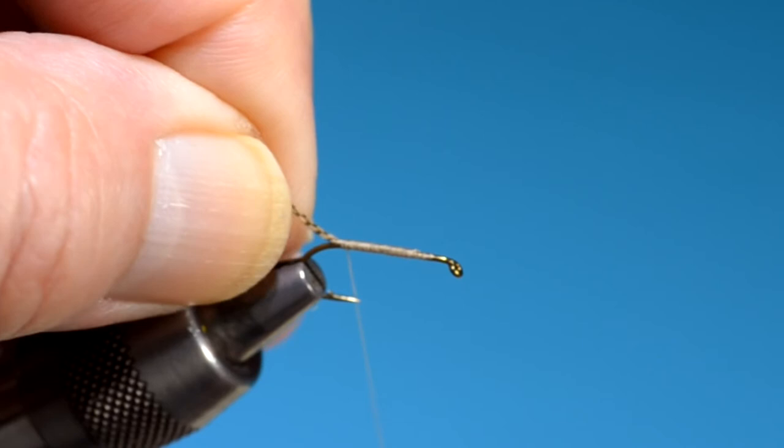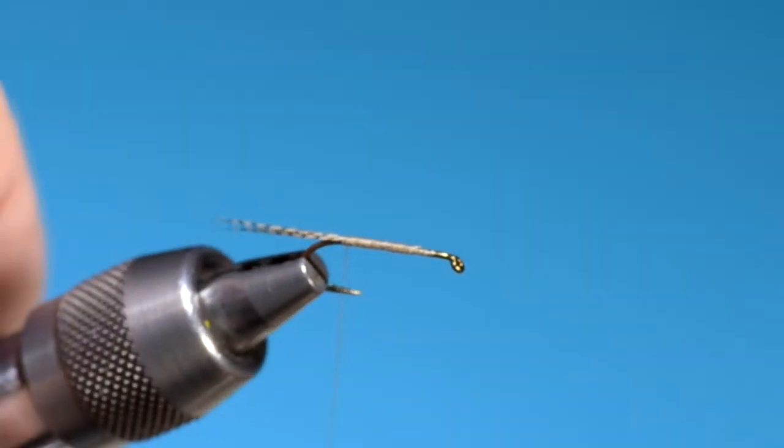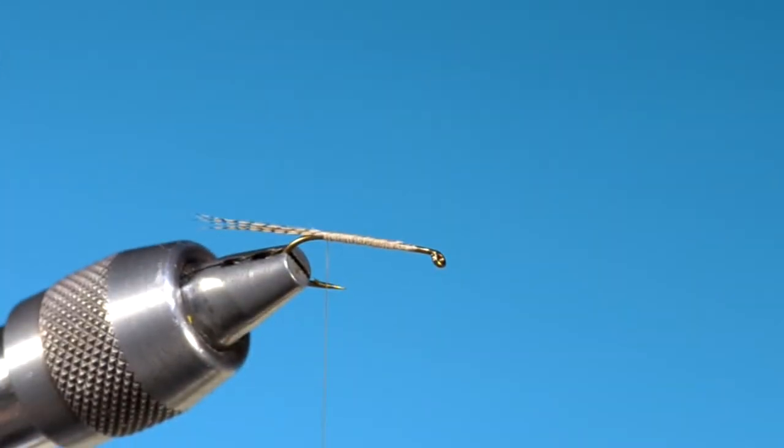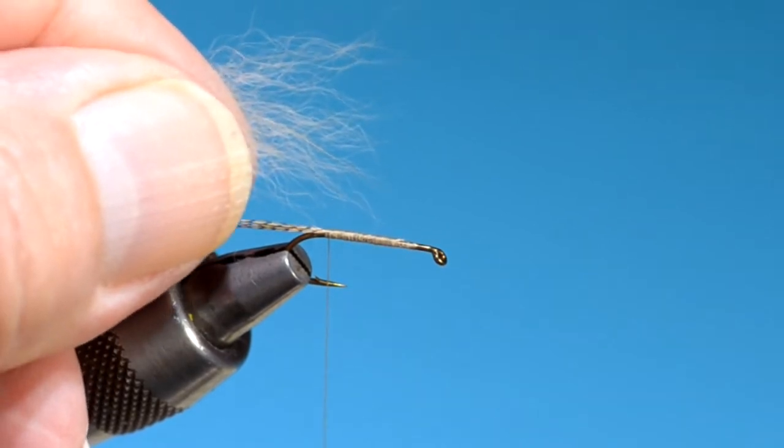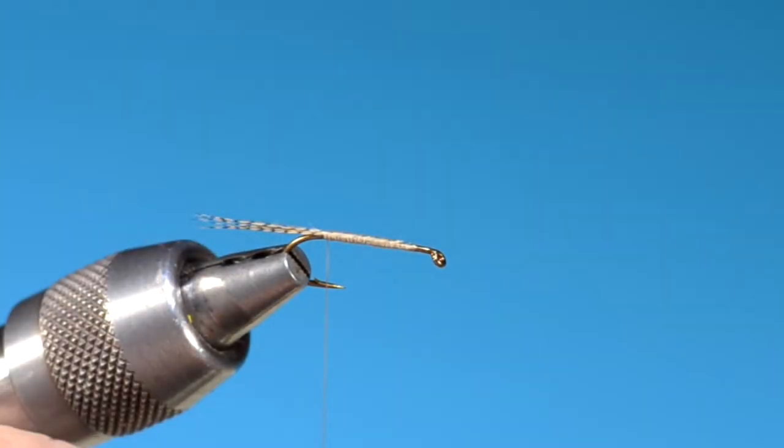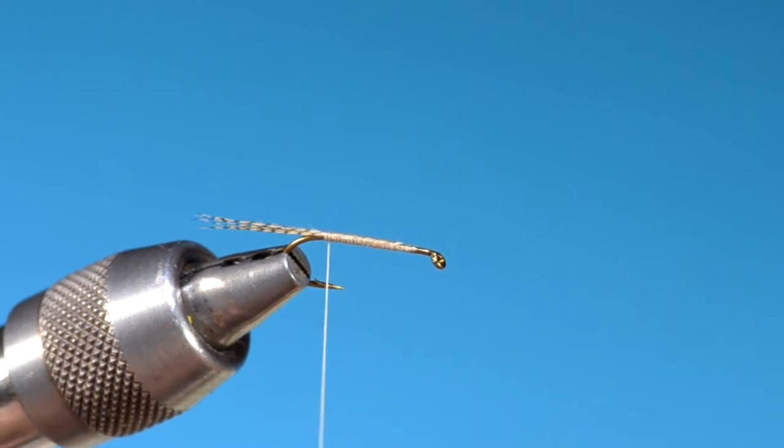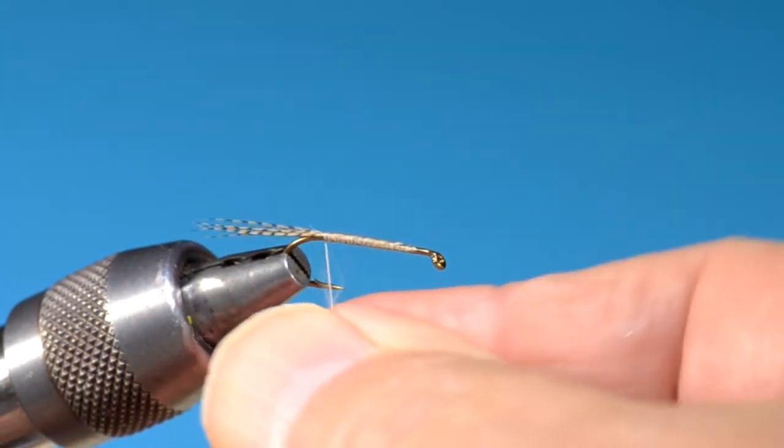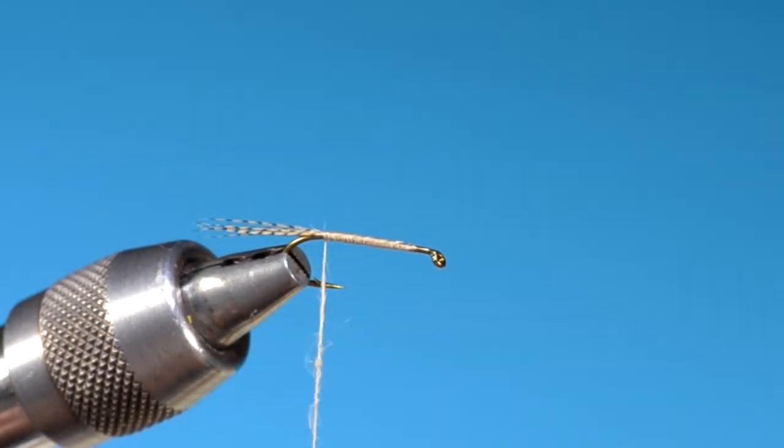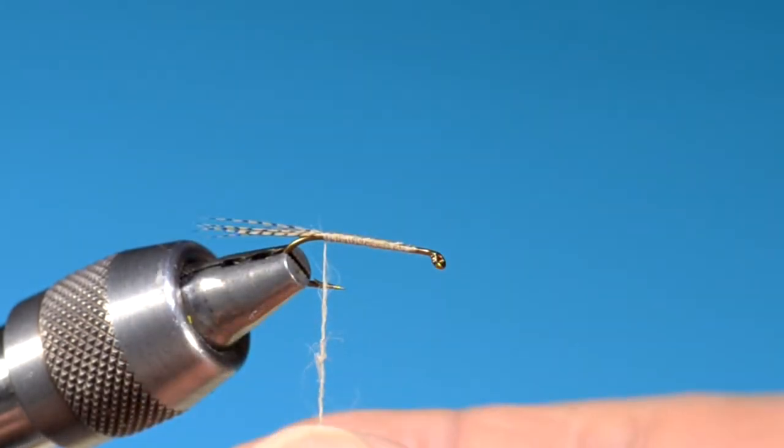What I do is in order to make a sort of a dubbing, it's not really a dubbing, I've just cut that in a little bunch off of the red fox skin, and then pulled out the guard hairs.